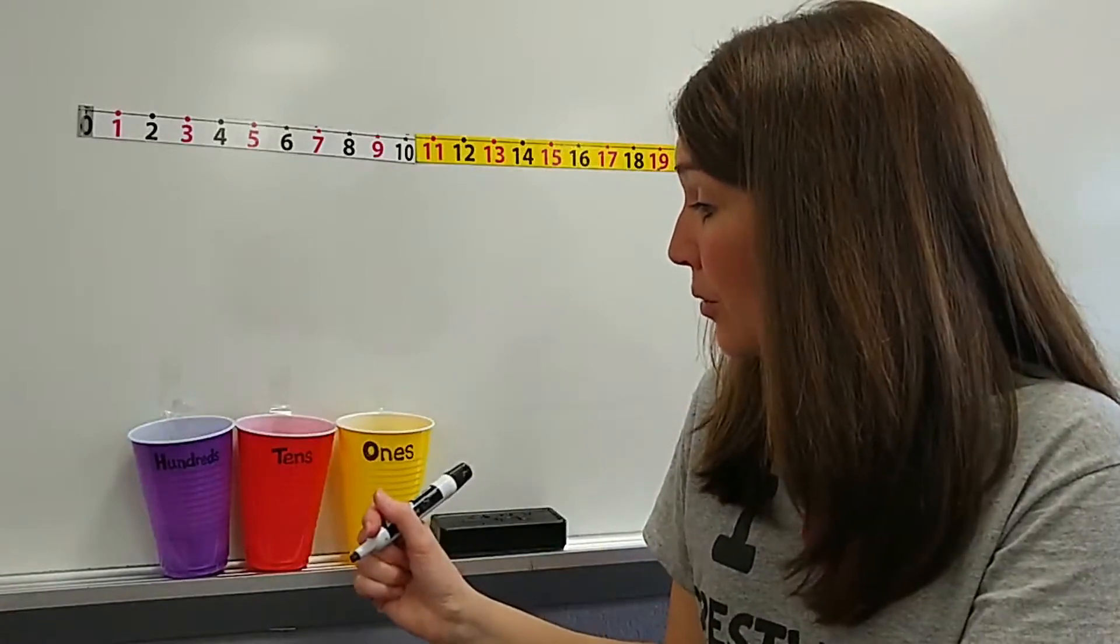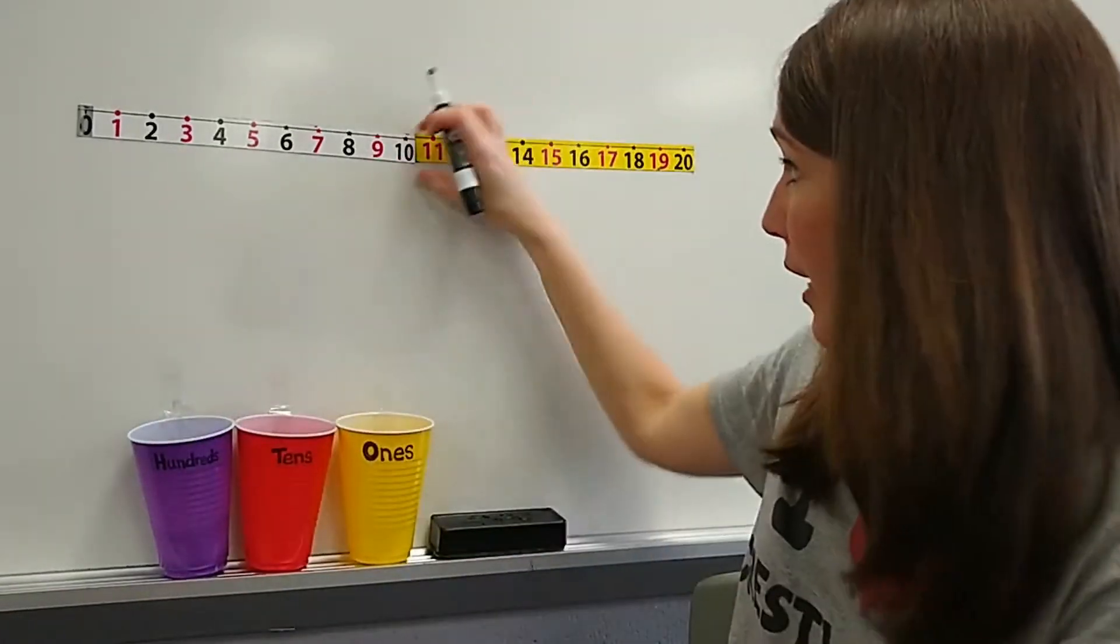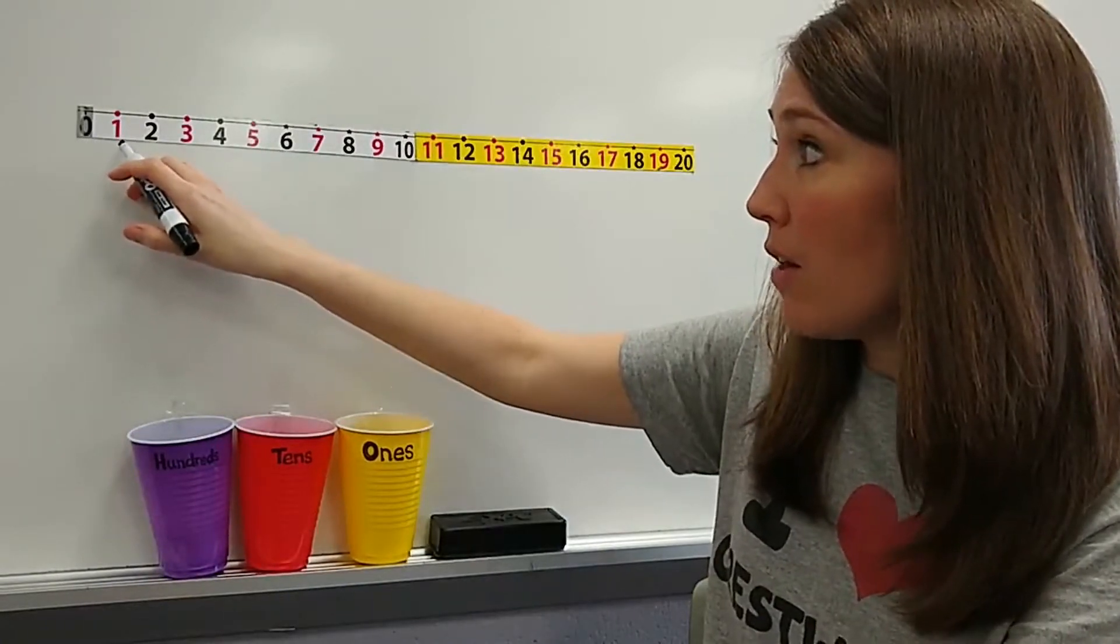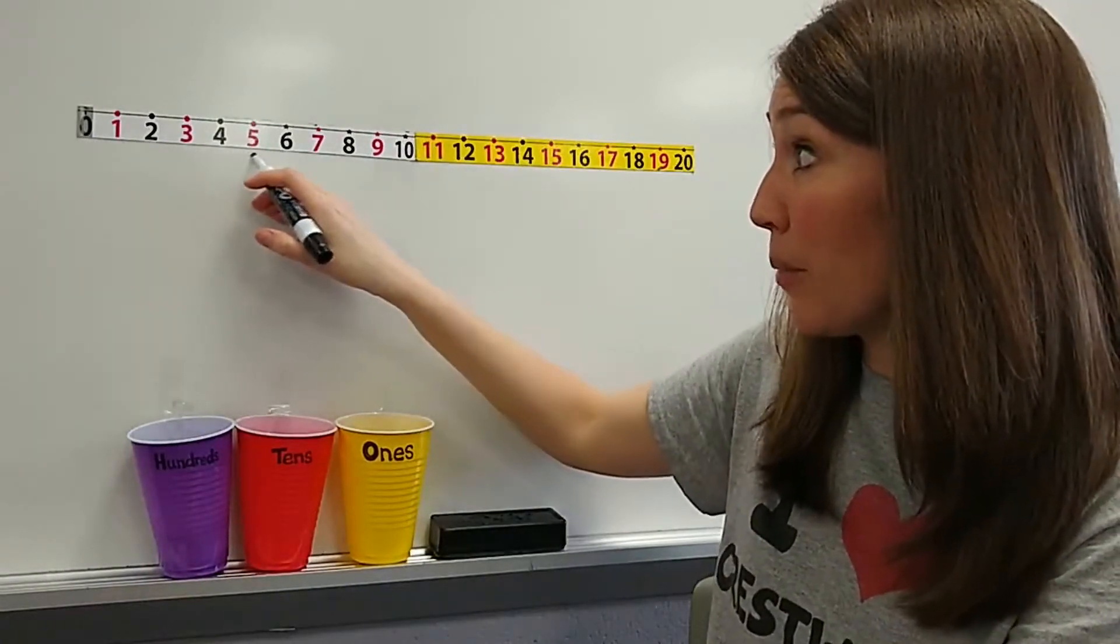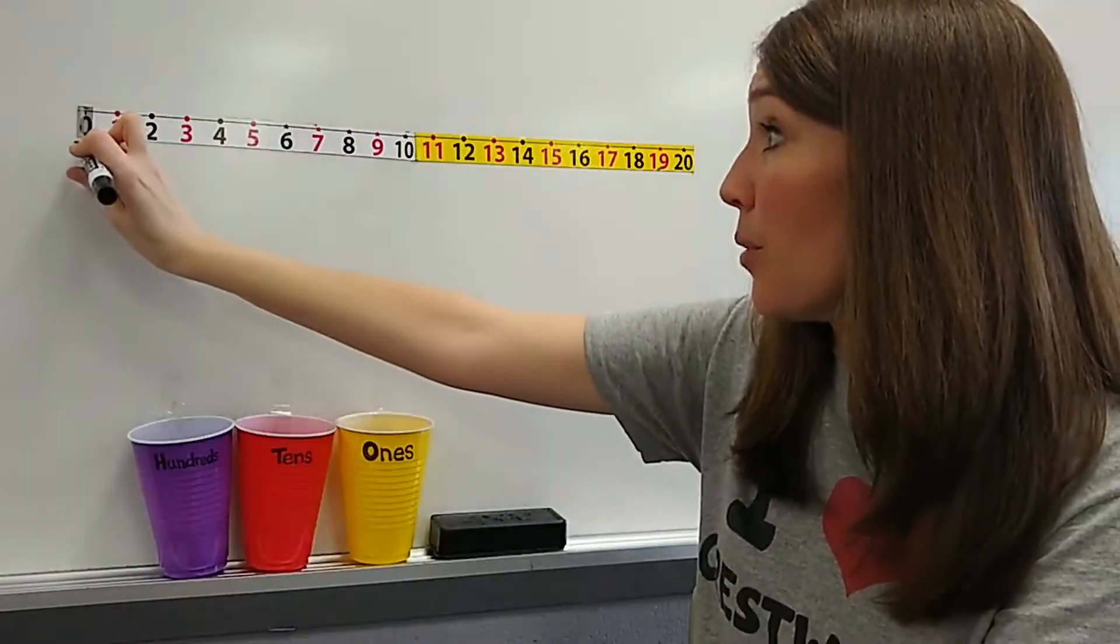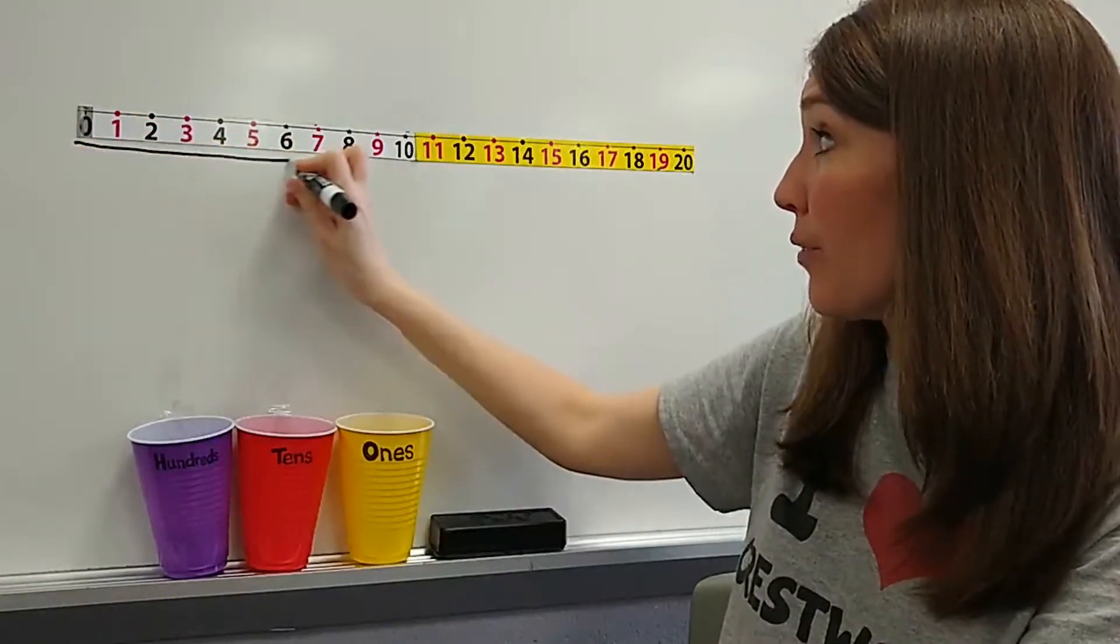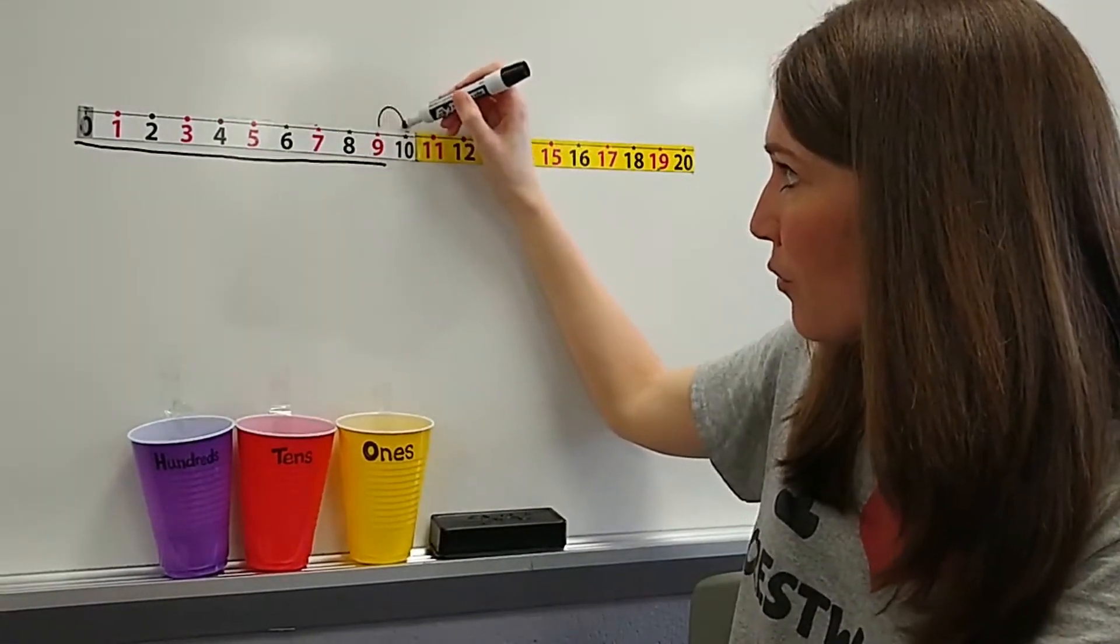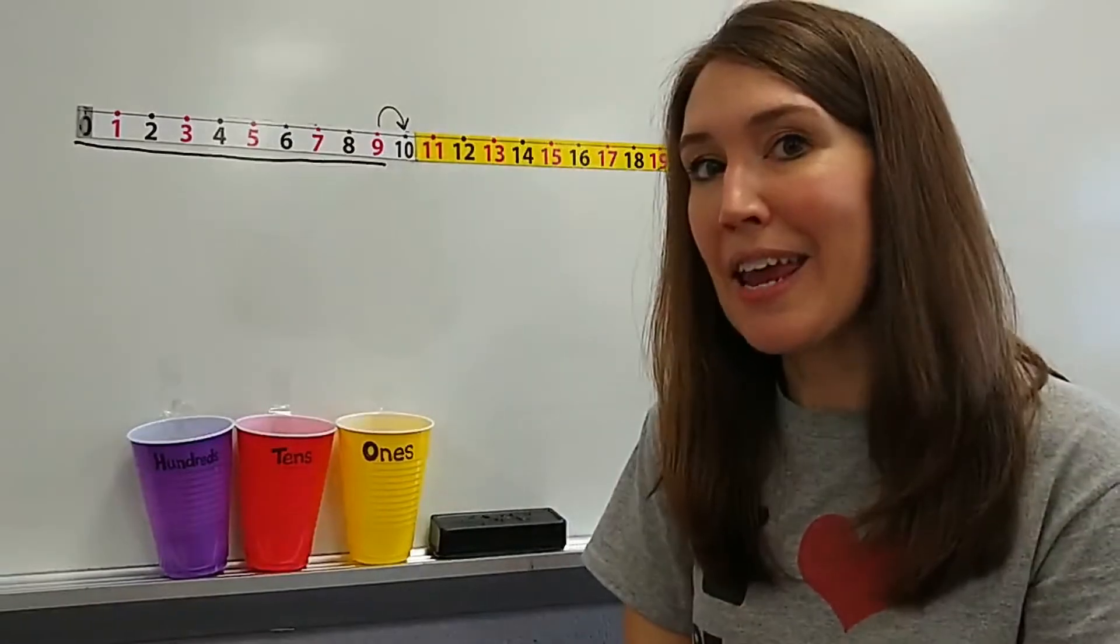All right, we're going to use our number line a little bit today, too. When we count, we notice that all of the numbers in the ones family are one-digit numbers. Zero, one, two, three, four, five, six, seven, eight, nine. But something happens when we go from nine to ten.